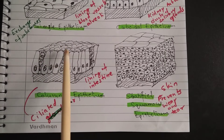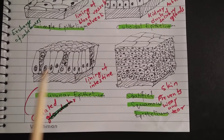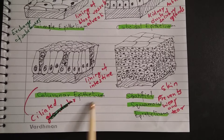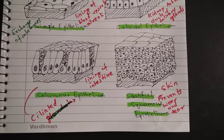The third type is columnar epithelium. The cells are in the form of long columns on a basement membrane. Columnar epithelium is found in the lining of the intestine. Sometimes cilia are present on columnar epithelium — cilia are fine hair-like structures. For example, in bronchioles there is ciliated epithelium; the cilia move to expel mucus and other debris. Ciliated epithelium is also found in the ovary, where movement facilitates transfer of the egg from the ovary to the fallopian tubes.